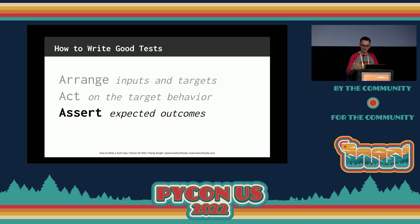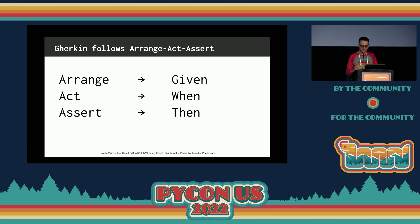Third, assert expected outcomes. Act steps should elicit some sort of response. Assert steps verify the goodness or badness of that response. Sometimes assertions are as simple as checking numbers or string values, but other times they may require checking multiple facets of a system or using something like visual snapshots. Assertions will ultimately determine if the test passes or fails.